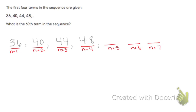So let's look and see what we're doing to get from the first term to the second term, to the third term, to the fourth term. What pattern do you see here? Yeah, we're adding four each time.